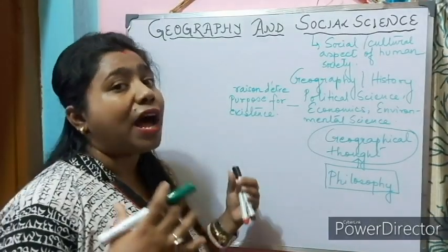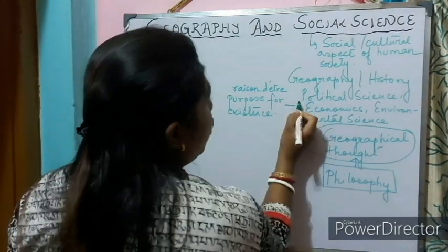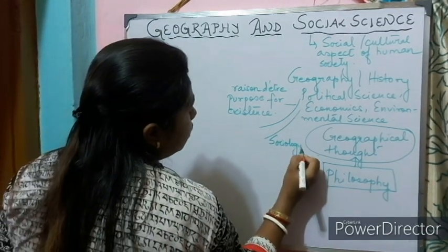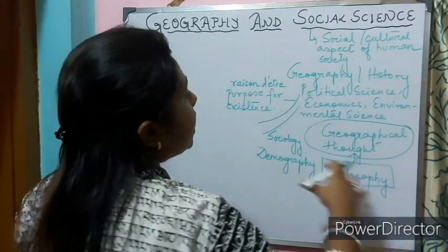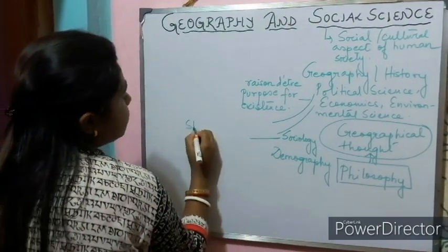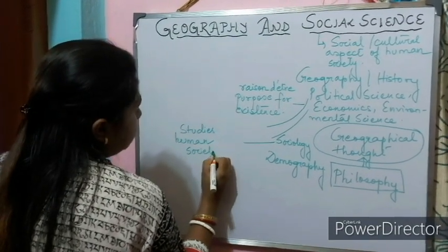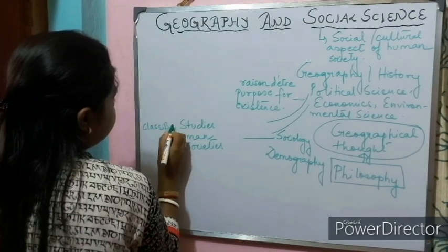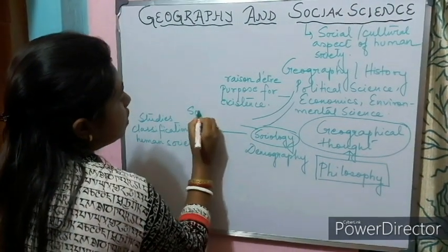There are other branches of social science which are interlinked with geography, such as political science, economics, sociology, and demography. Sociology studies human societies and the classification of human societies. It is related with social geography.